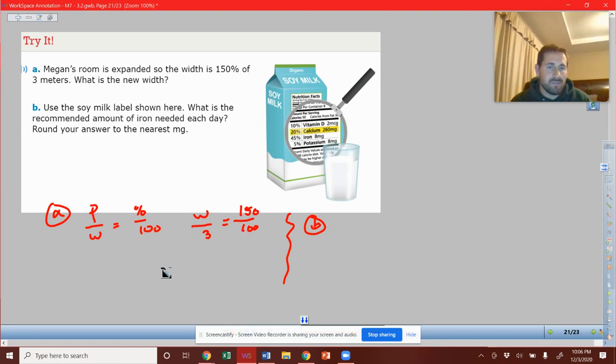So we can again cross multiply and solve this. We're going to have 100W equals 3 times 150. So 100W equals 3 times 150 is 450. And then we can divide each side by 100. And we'll get W to equal 4.5. So 4.5 meters is going to be the new amount.